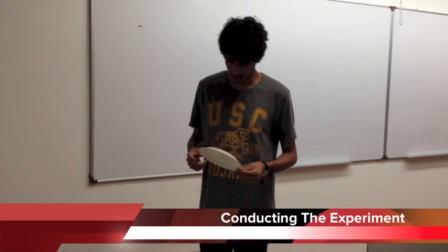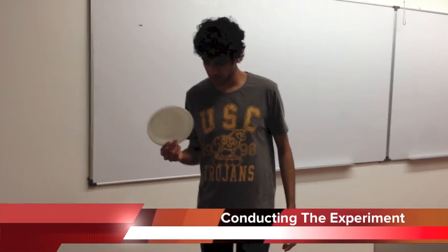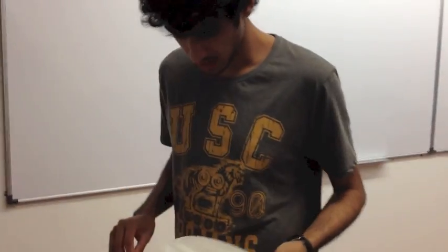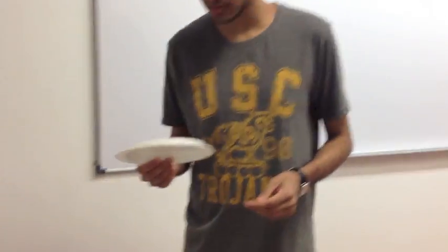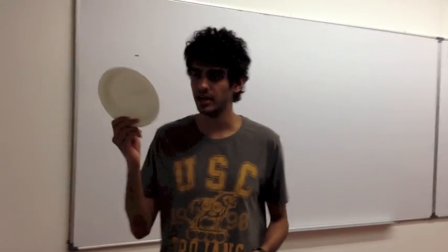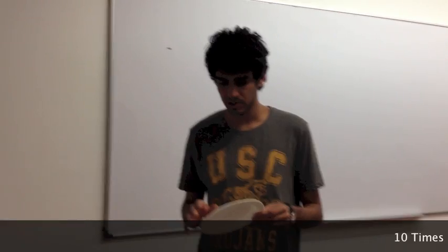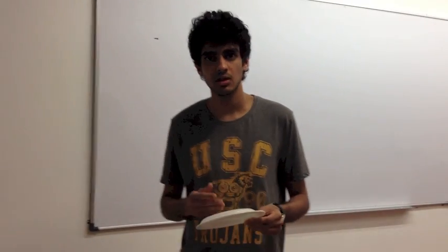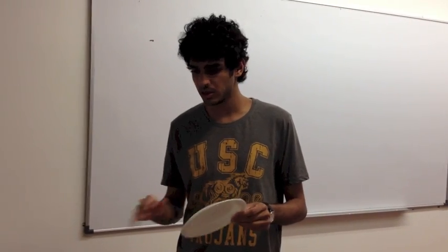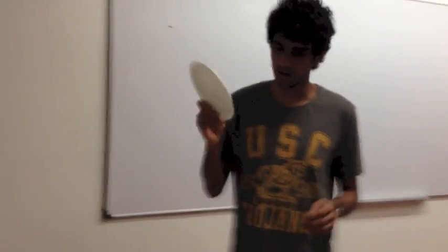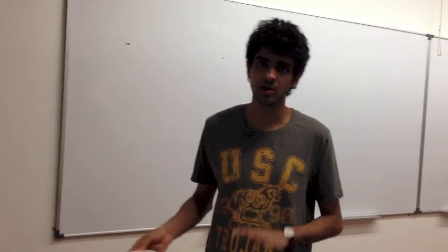Now we are going to conduct the experiment. The first material is going to be the polystyrene plate. We'll charge it by rubbing it with my hair. We try to keep the number of strokes at around 10, because each stroke removes some electrons. So we'll keep everything constant — 10 strokes of rubbing on my hair to keep the electron count roughly the same.